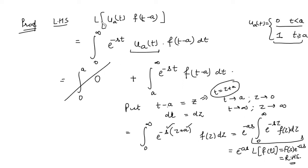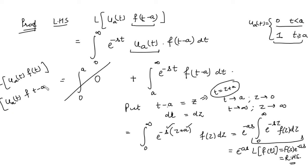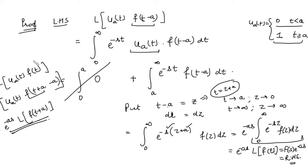So the Second Shifting Theorem states: the Laplace of u(t-a)·f(t-a) = e^(-as)·F(s). If we are given f(t) rather than f(t-a) multiplied by the unit step, we can still apply the theorem. In that case, Laplace of f(t)·u(t-a) = e^(-as)·Laplace{f(t+a)}. So if f(t-a) is given, the result is e^(-as)·F(s); if f(t) is given, the result is e^(-as)·Laplace{f(t+a)}.